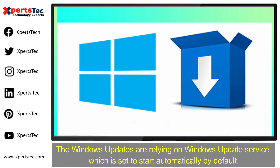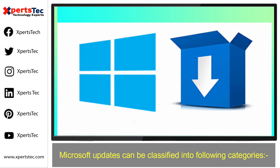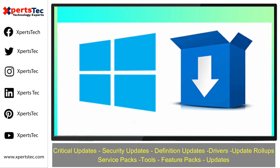Windows updates rely on the Windows Update service, which is set to start automatically by default. The Windows Update service will download, install, and recommend important updates automatically. Microsoft updates can be classified into a few categories: critical updates, security updates, definition updates, driver updates, rollups, service packs, tools, feature packs, and updates.